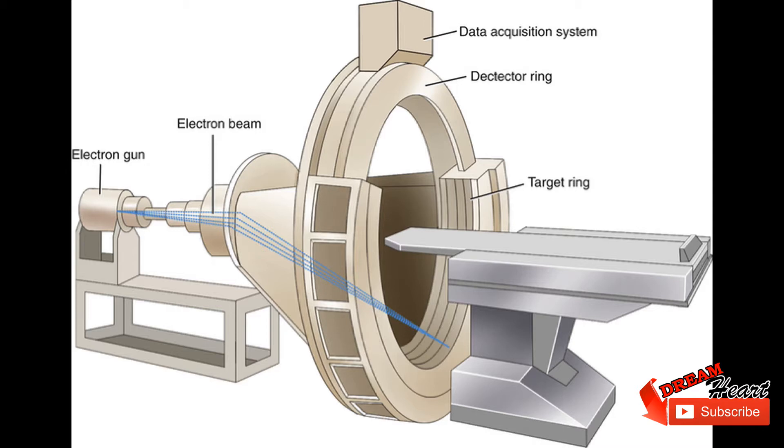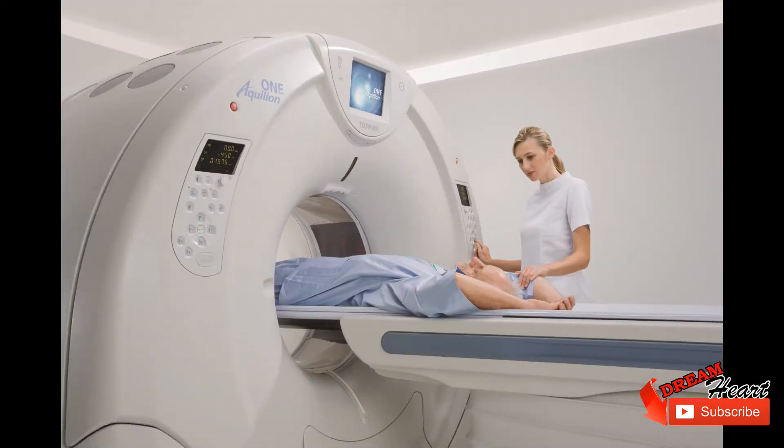Instead of rotating a conventional x-ray tube around the patient, the EBCT machine houses a huge vacuum tube in which an electron beam is electromagnetically steered towards an array of tungsten x-ray anodes arranged circularly around the patient. Each anode is hit in turn by the electron beam and emits x-rays that are collimated and detected as in conventional CT.